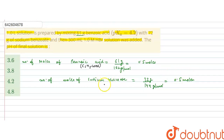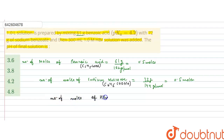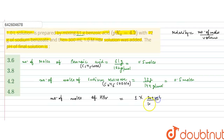Sodium benzoate has the formula C6H5COONa. Now, 300 ml of 1 molar HBr solution was added. Since molarity = moles / volume, moles of HBr = 1 molar × 300 ml / 1000 = 0.3 moles of HBr.